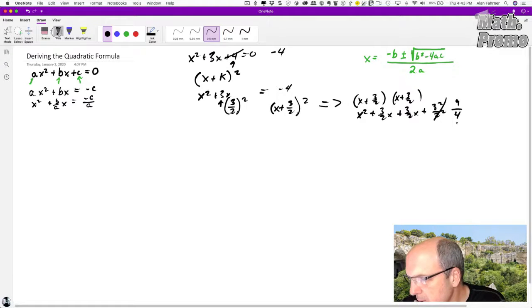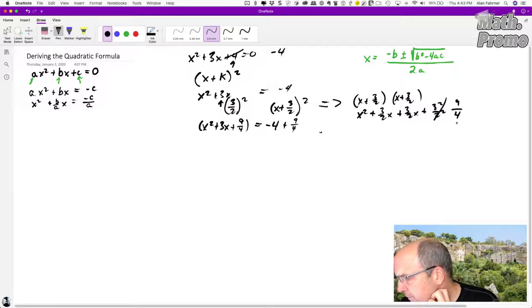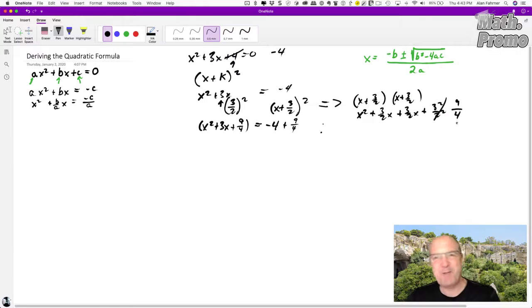You wanted to add half squared. So to do this one, you would do x squared plus 3x plus 9 4ths equals negative 4 plus 9 4ths. This gives you an idea. Let's get back to the tutorial.